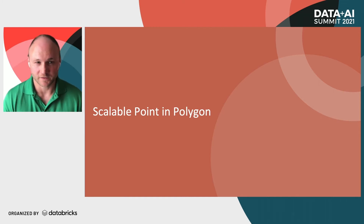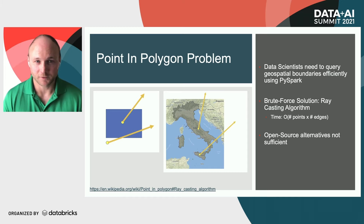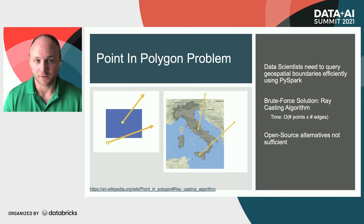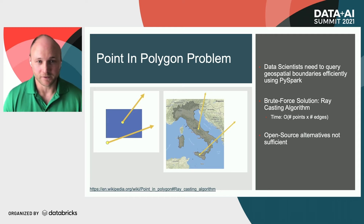Now that we've learned how to partition our data sets by space, I'm going to talk about an application of this partitioning in our scalable point and polygon algorithm. Our data scientists at Deere need to efficiently query geospatial boundaries using PySpark, which is central to a lot of the insights we generate for our farmers. The algorithm we'll focus on today, ray casting, is a very popular algorithm for point and polygon searches. It states that from a given point, if you cast a ray in any direction, that point is within a polygon if it intersects an odd number of times. You can see this with a simple rectangle example and it also extends to complex multipolygons, like the shape of Italy.